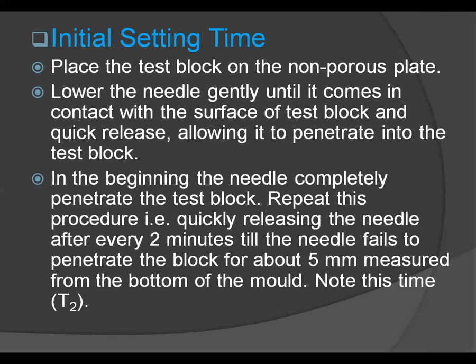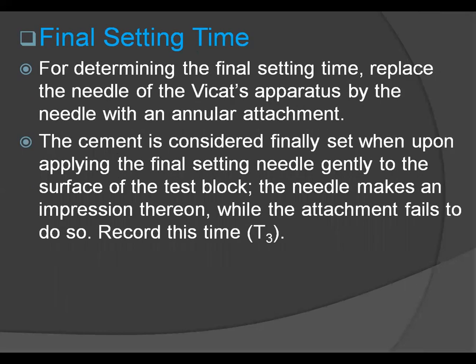For the final setting time test, replace the needle of the Vicat apparatus with the needle with an annular attachment. The cement is considered finally set when, upon applying the final setting needle gently to the surface of the test block, the needle makes an impression but the annular attachment fails to do so. Record this time as T3.